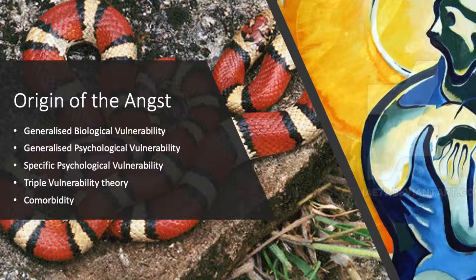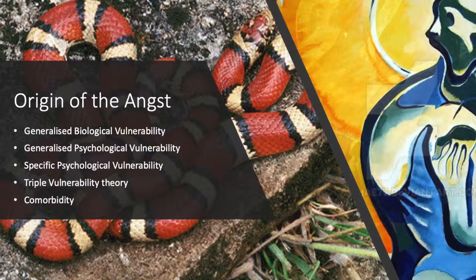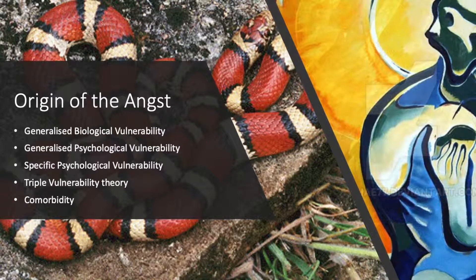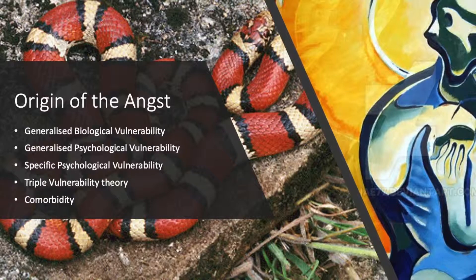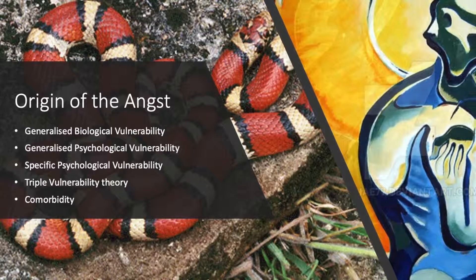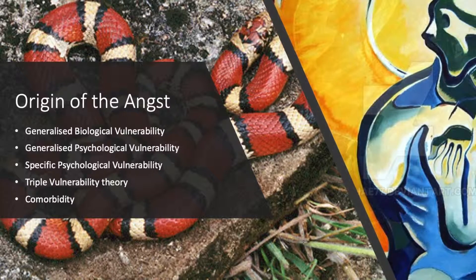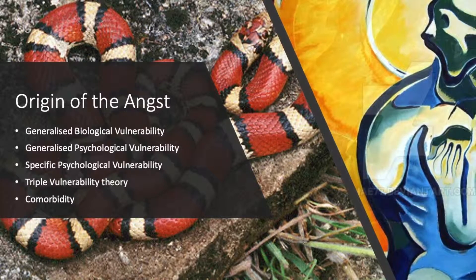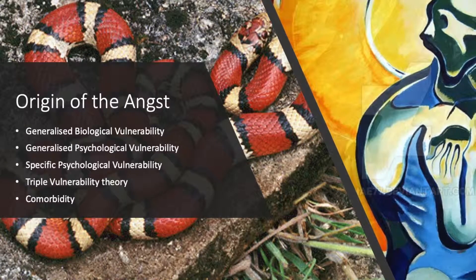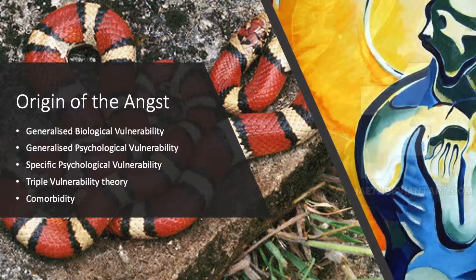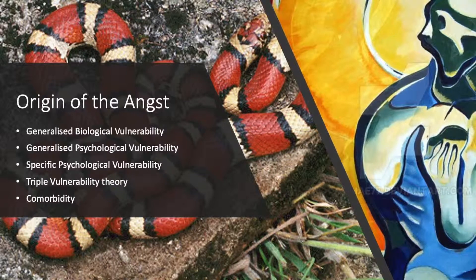Generalized biological vulnerabilities are the genetic inheritance of anxieties, but these don't explain causes that much. The reasoning for these biological vulnerabilities tends to be circular — for example, why are people scared of snakes? Because snakes have historically posed a danger to people, and this posing of danger causes people to be afraid of snakes.